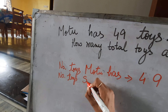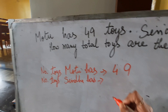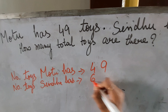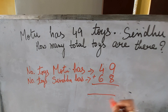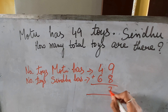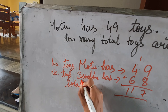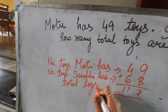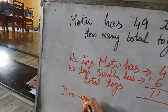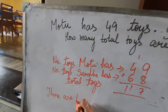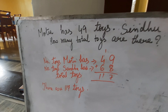What will you write? Number of toys. Now who has? Sindhu has. How many toys does Sindhu have? 68. So you will write here 68. And it is total, so you will put a plus sign over here. Is it clear? Yes, a plus sign over here. Total toys — what will you write? Total toys. Then you will write: there are one hundred seventeen toys.